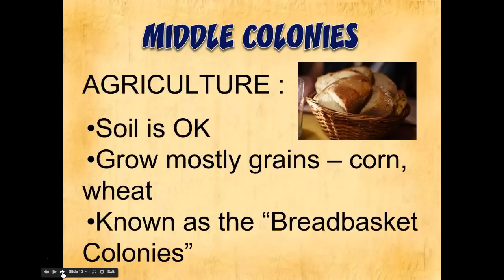In terms of agriculture, the middle colonies are going to have a lot more agriculture than New England. The soil is okay — not as rich as the south, but much better than what the New England colonies had. They're going to grow mostly grain-type crops, things like corn and wheat. Because of this, they're known as the "bread basket" colonies, because they're producing a lot of agricultural grains — corn, wheat, and things like that — that are eventually going to be traded or sent to the other colonies.